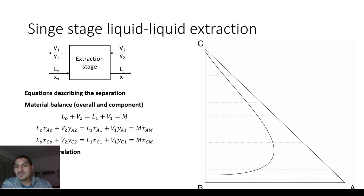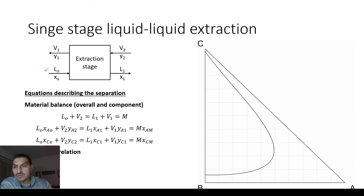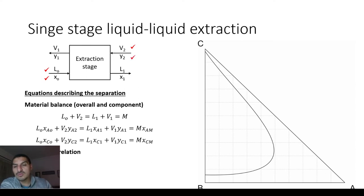We get three equations because we have three components, so the overall balance with the two component material balance equations is more than enough. We know the amount and composition of the liquid feed, which lets us place it on the diagram and apply the lever arm principle. The same applies for V2 and Y2. The feed, a mixture of A and B, contains no solvent, so it's placed on one axis, and the pure solvent V2 is placed at the solvent corner.